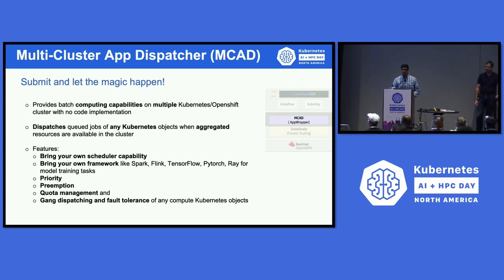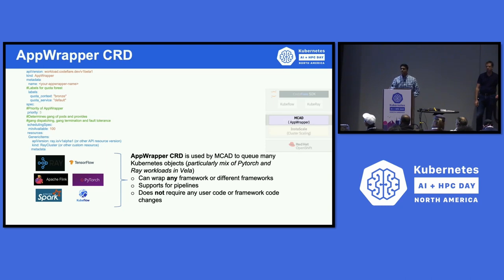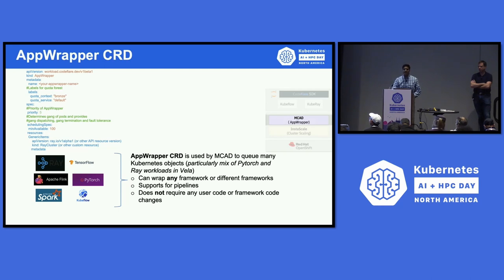The bring-your-own framework capability is enabled by the AppWrapper CRD. Notable sections of the AppWrapper CRD include the resource version and name in the metadata section, quota trees supported via label, integer priorities in the spec section, and fault tolerance in the scheduling spec stanza. The bring-your-own framework capability is supported by generic items — it has the ability to wrap or append any custom resource you want, which then gets queued inside the MCAD queue. All this happens with zero code changes on the target operator.